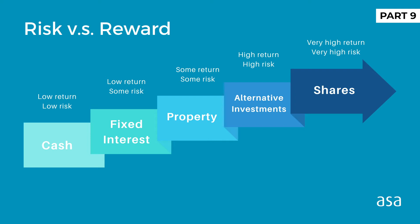Usually when we talk about asset classes, we divide them into two baskets: income or defensive assets, and growth assets. Growth asset classes — like equities, property, and infrastructure — aim for higher returns but also take on higher risk, so their prices are more variable. Defensive assets, like cash and bonds, are assumed to have lower average returns than equities, but they give you higher levels of safety and less variation in those returns.